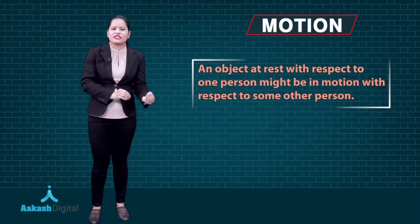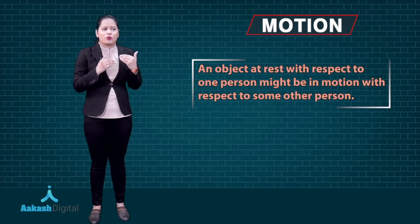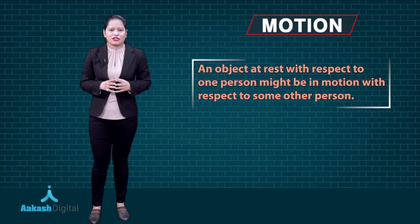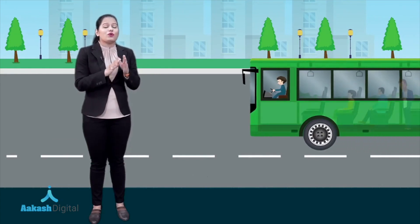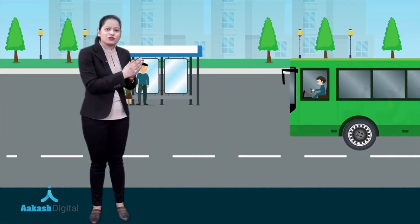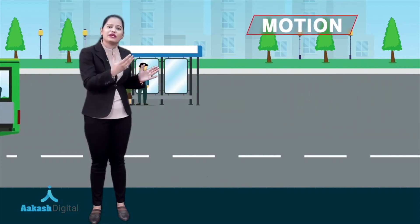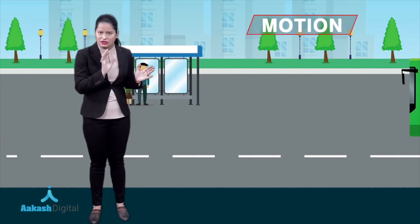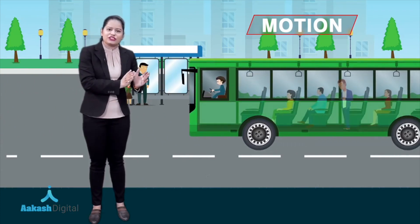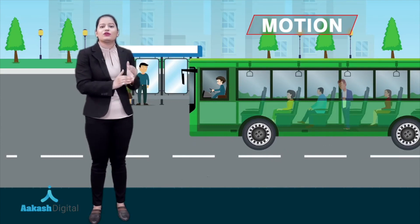An object at rest with respect to one person might be in motion with respect to some other person. Let us suppose you are traveling in a bus — you are at rest with respect to the fellow passenger, but you are in motion with respect to a person who is standing at the bus stand or on the ground. As the bus is moving, you are also moving since you are sitting inside that bus. So with respect to the fellow passenger you are at rest, but with respect to the person standing on the ground, you are in motion.